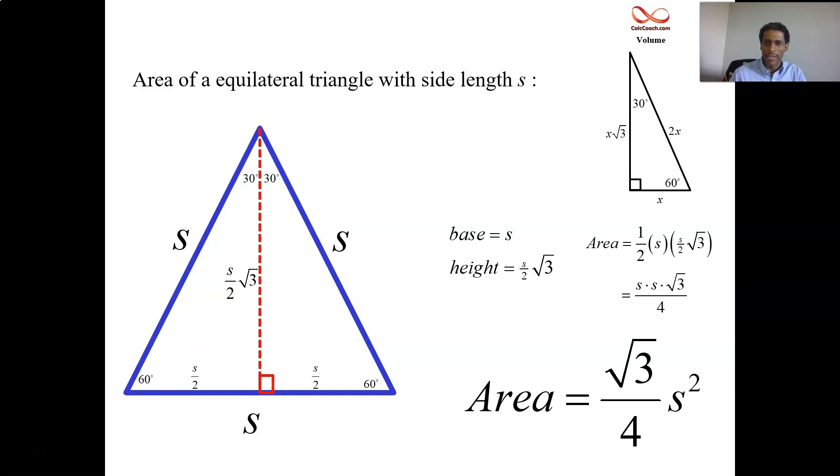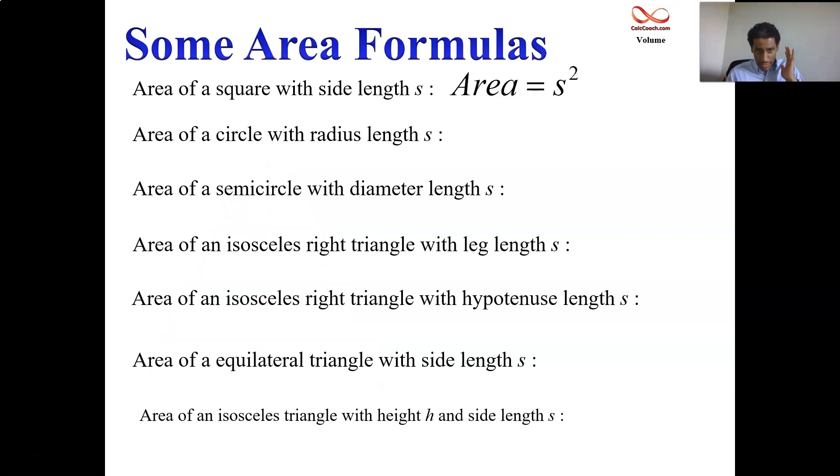This video is getting kind of long. But I just want you to be able to develop all the formulas so that you don't have to worry about developing them on the fly. And so if your cross sections are squares, you know the formula. If they're circles, you know the formula. If they're semicircles, you know the formula. If you have isosceles triangles where the leg is running along the base, if you have an isosceles triangle where the hypotenuse is running along the base, if you have an equilateral triangle, then we know exactly the area. And this last guy, we didn't have to derive, but if you have an isosceles triangle where the height is h and the s is the third side that's not the same, then just one half the base times the height.